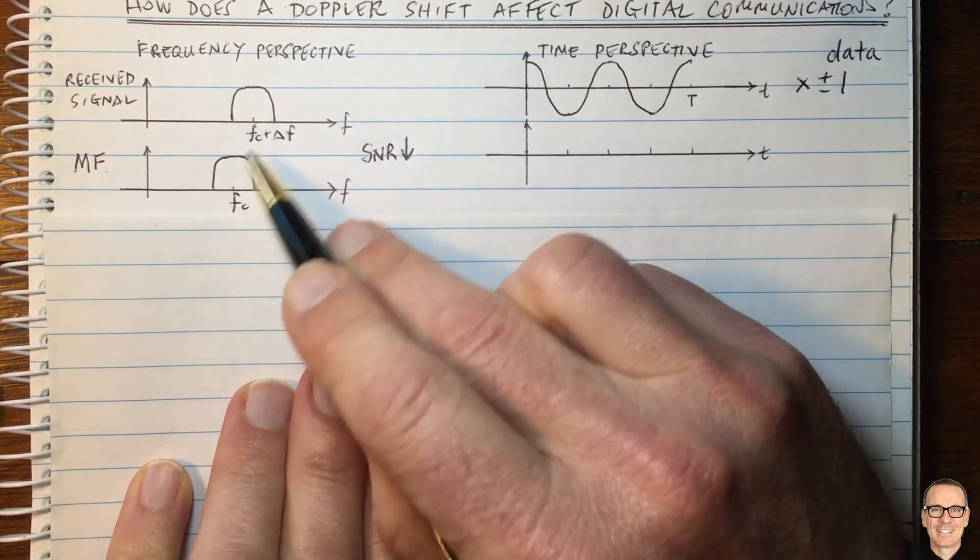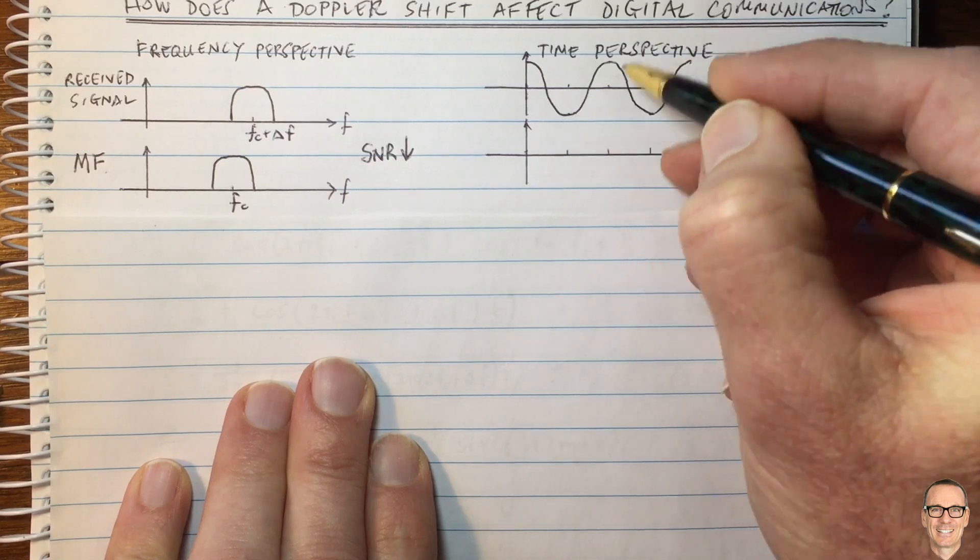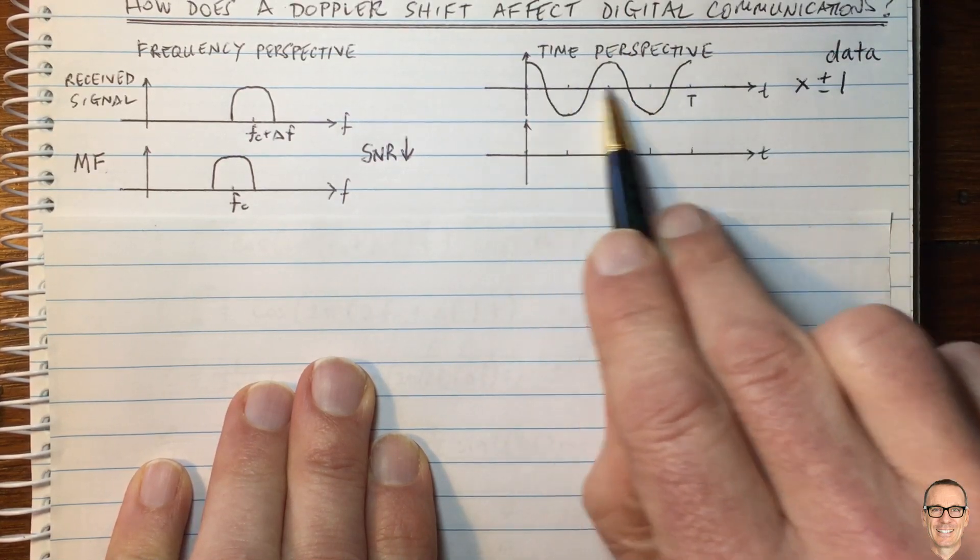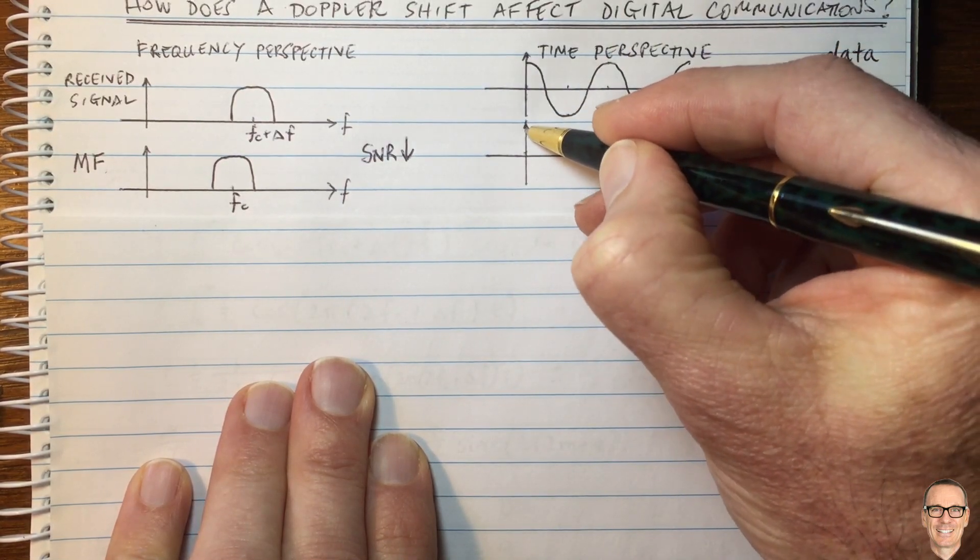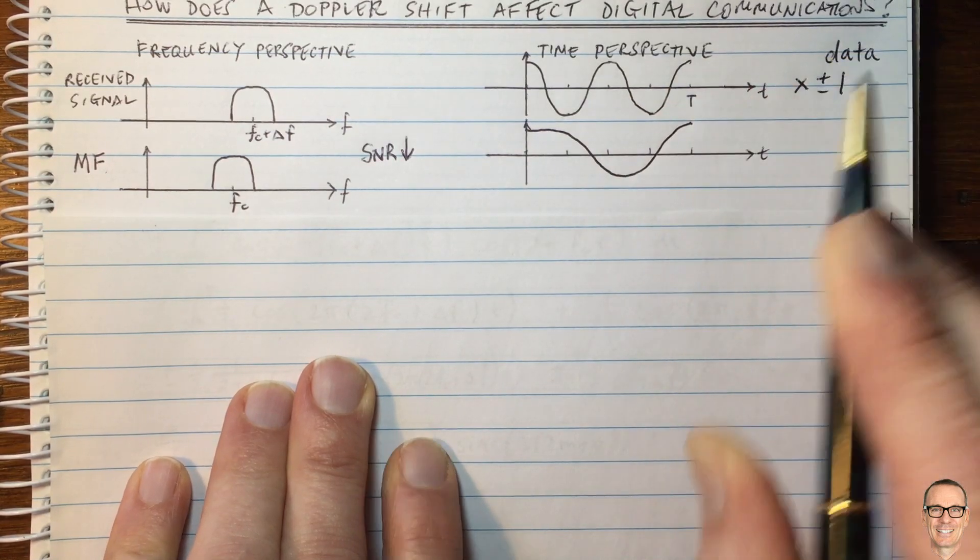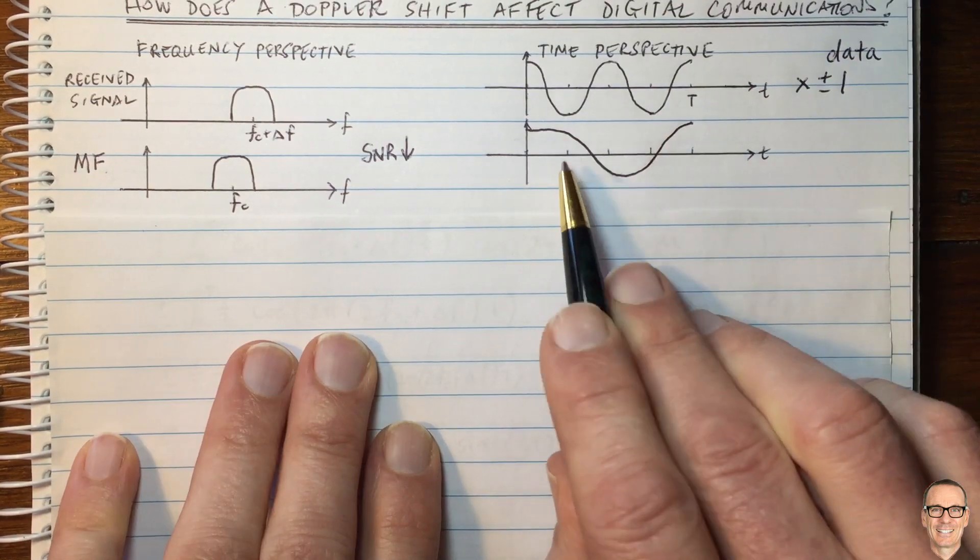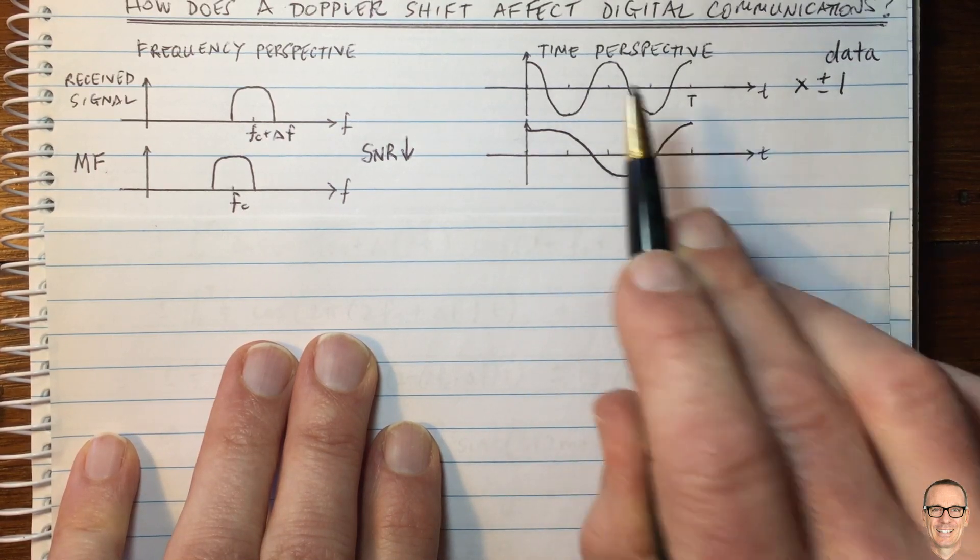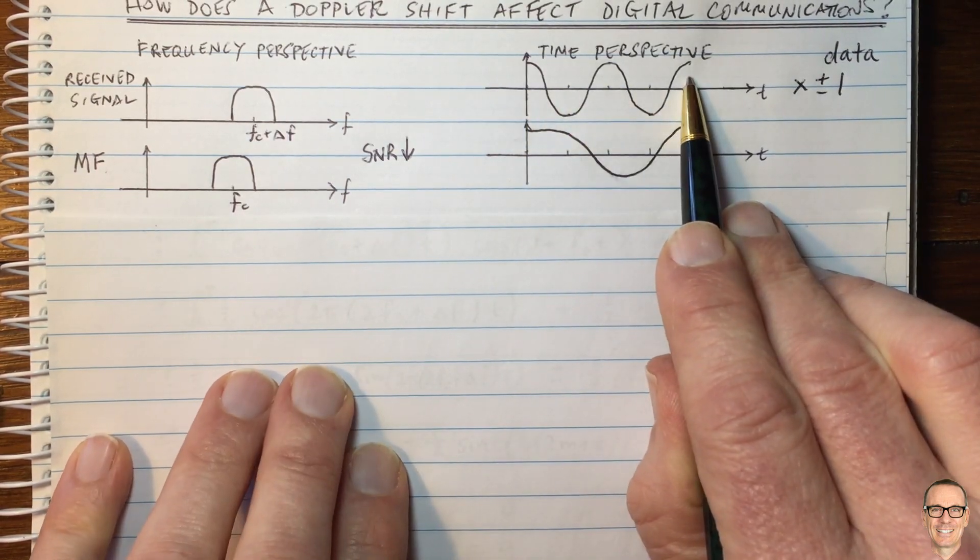So we'll match it up to this one here. It'll be at a lower frequency. So this one is F plus delta F, and so the matched filter will be at a lower frequency over that time period. So here's the waveform at the carrier frequency, and here's the waveform with the Doppler shift.